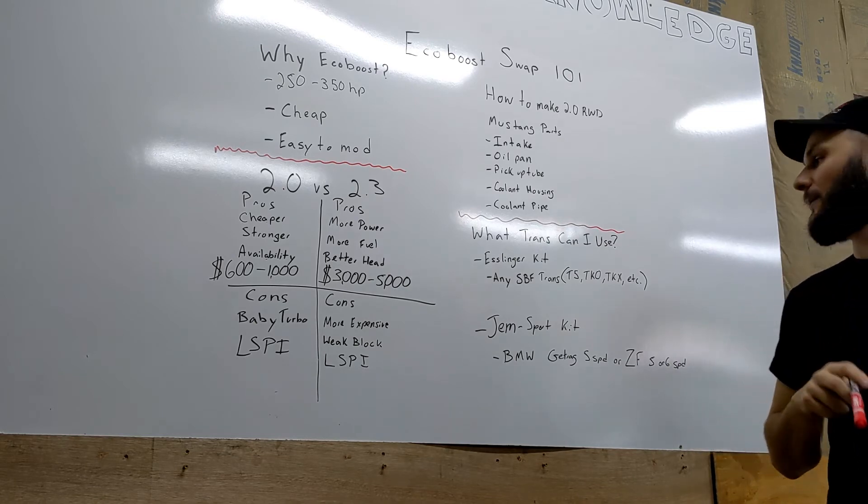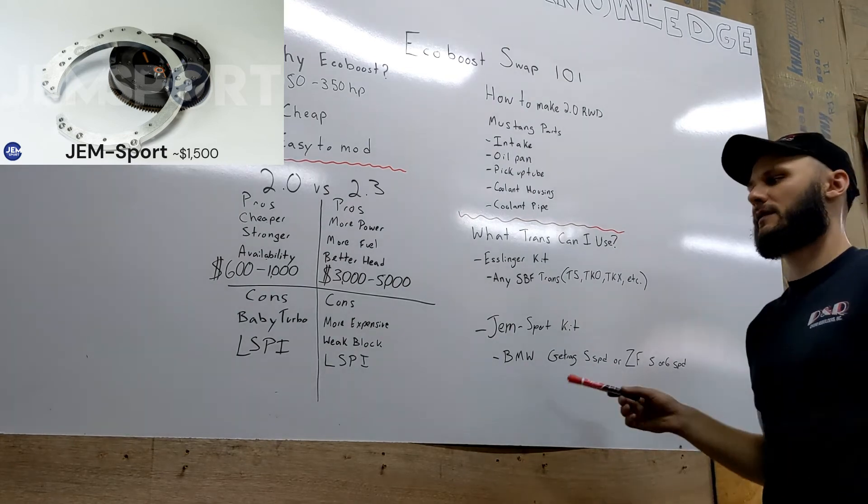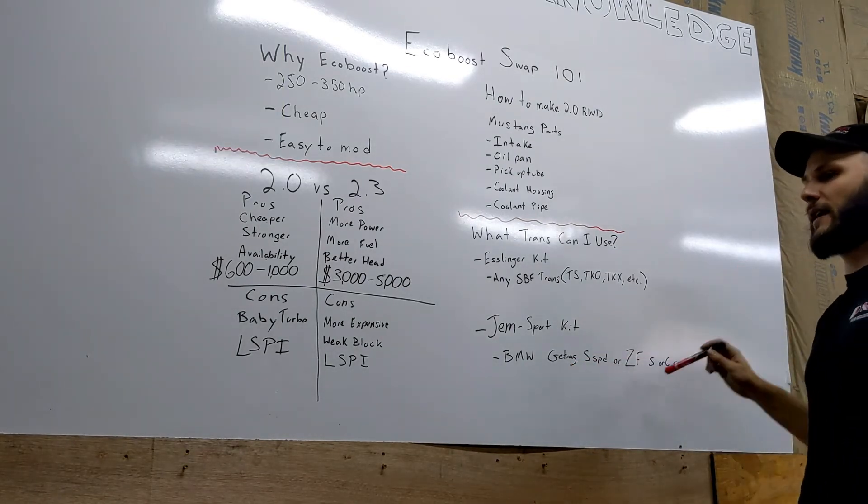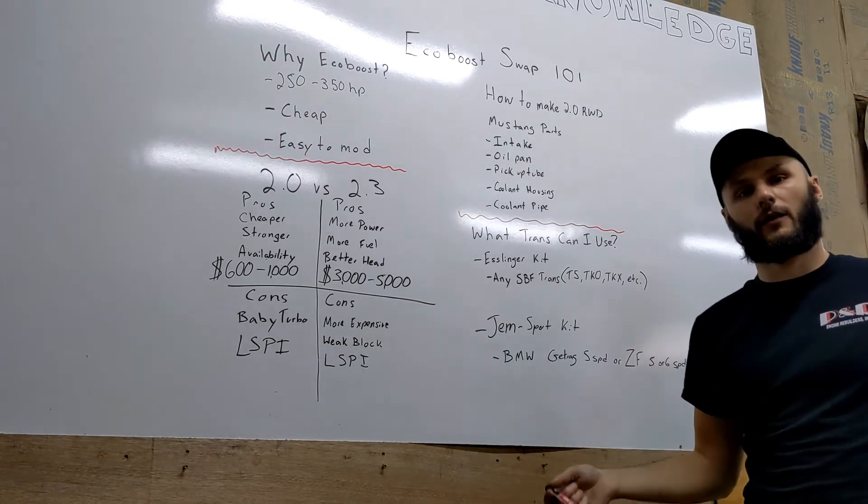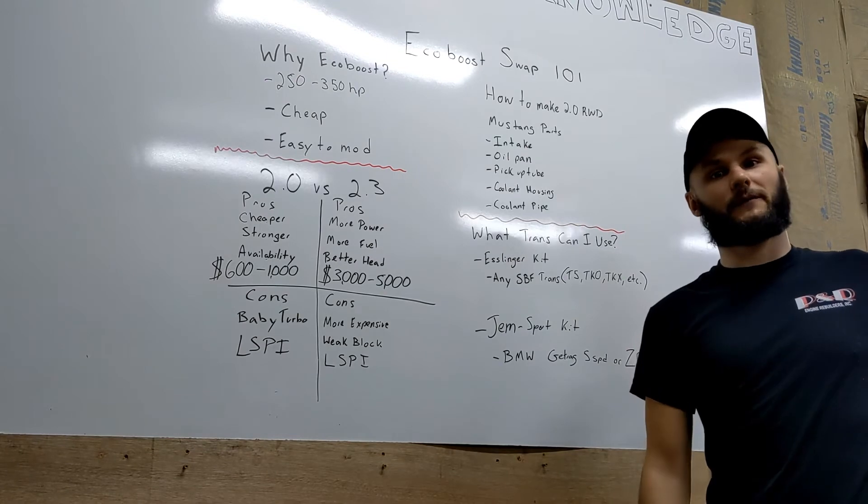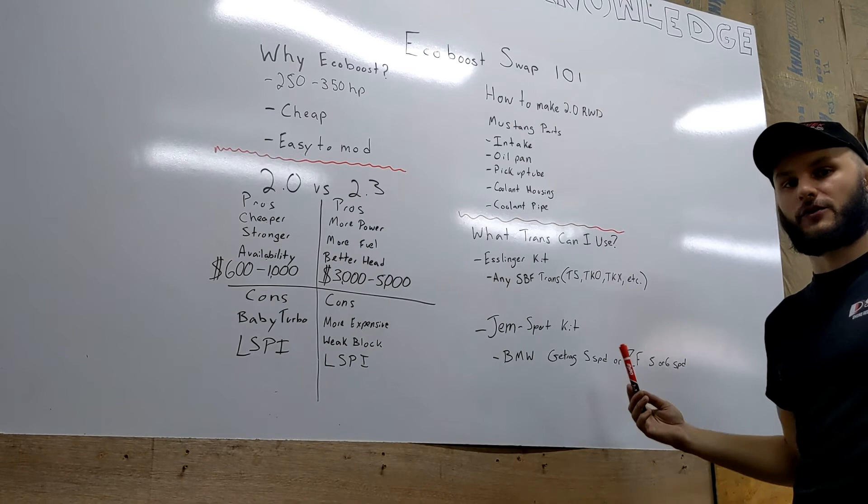If you go with the Gem Sport kit, that's all your BMW guys. This is what Chelsea DeNofa runs. You can use the Getrag 5-speed or the ZF 5 or 6-speed. I don't know a whole lot about BMW trans because I've never owned a BMW, but if you want to run a BMW trans and if you can find one cheap and that's what you're into, Gem Sport kit.